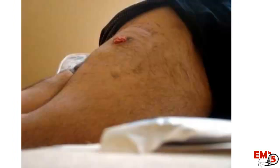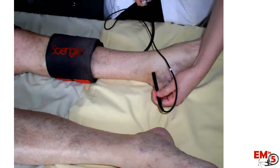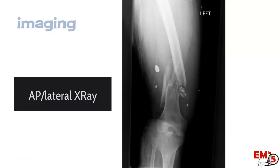Especially for penetrating traumas, where you're going to have much more likely concurrent vascular injury, make sure to do ABIs. This is really important to document any signs of vascular injury and also to decide if you need further imaging.